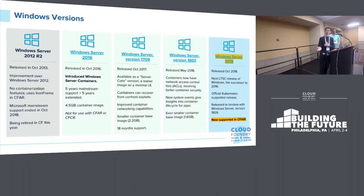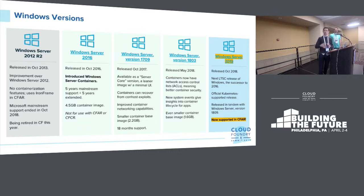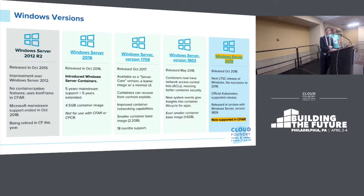There's support for Windows Server 1709 and then 1803, which shipped around early May 2018. This really reduced the size of the container image to a small level. Finally, Windows Server 2019 — the next long-term servicing release with a 10-year support policy from Microsoft — shipped. This is the official Kubernetes-supported release for Windows and a more stable version as far as container APIs are concerned. We've just pushed support into CFAR for Windows 2019.